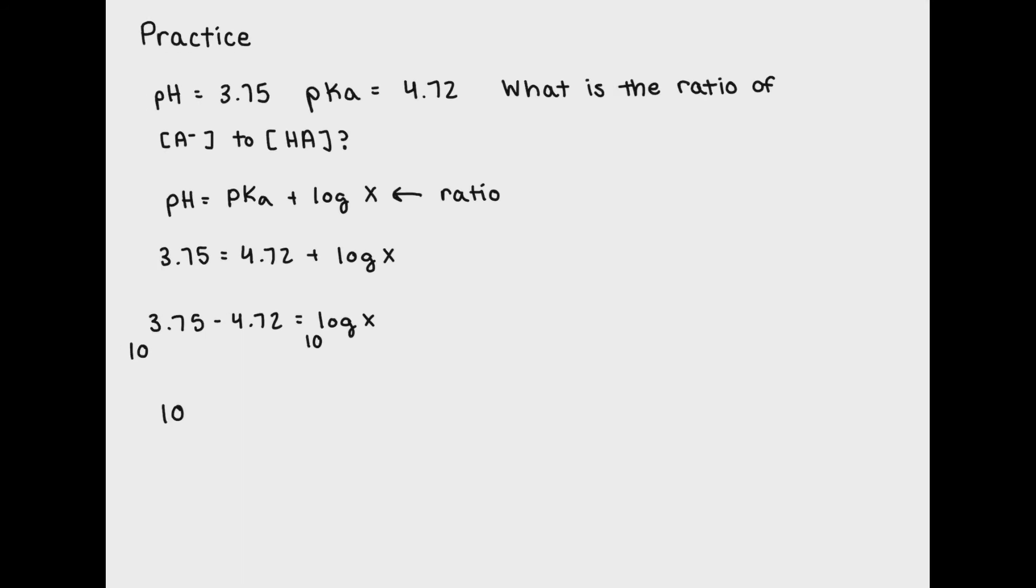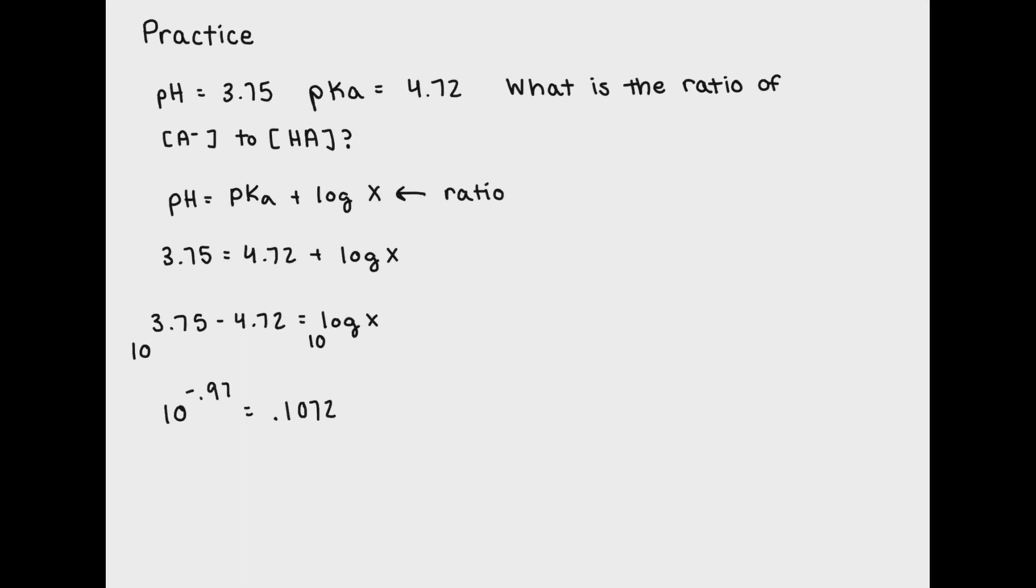If I plug these values into my calculator, I get that the ratio of conjugate acid-base pair is 0.1072. Because this number is a decimal, it could also be represented by a fraction, which means that there is more conjugate acid than there is conjugate base.